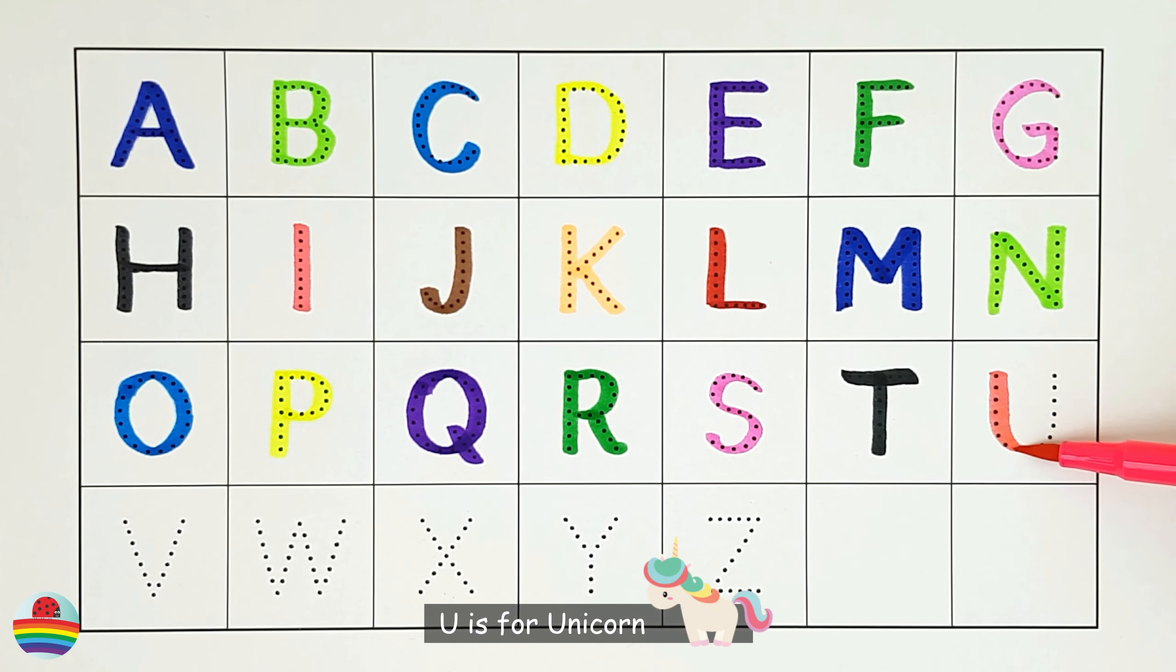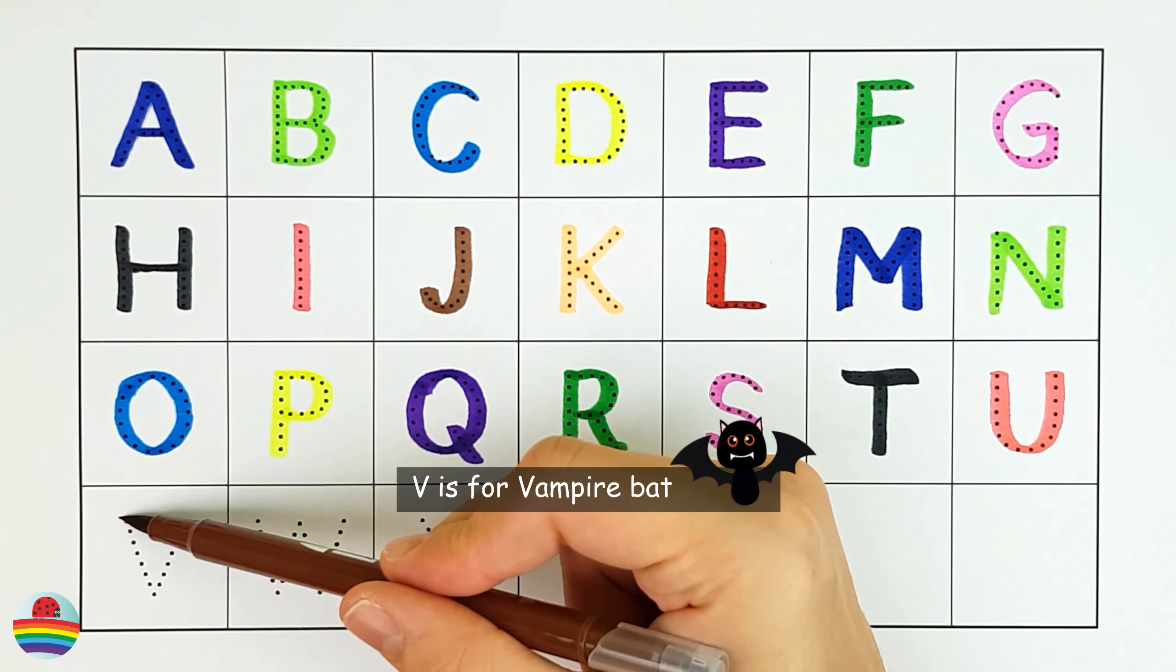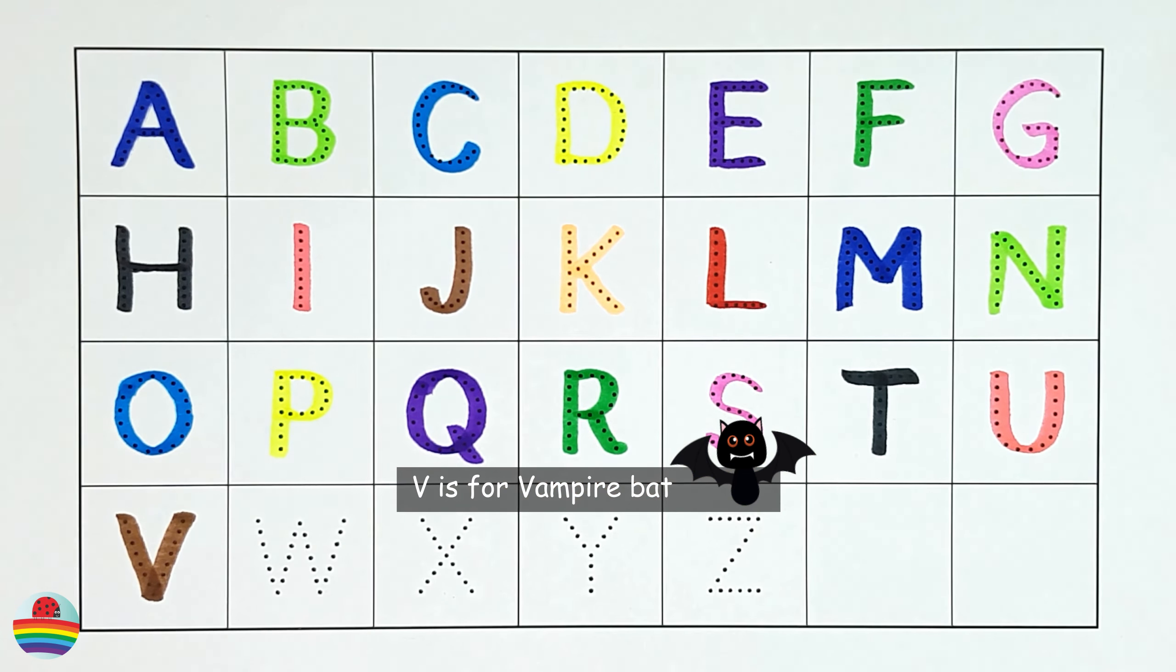U. U is for unicorn. U. V. V. V is for vampire bat. V.